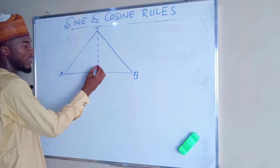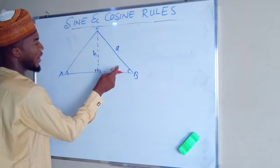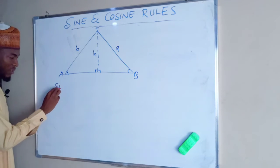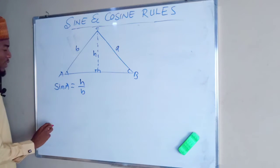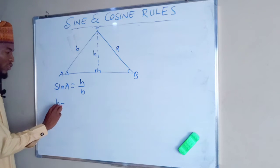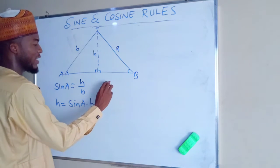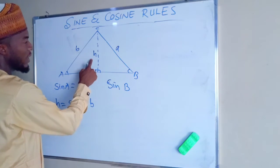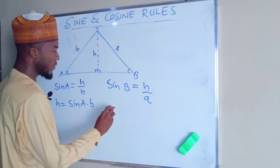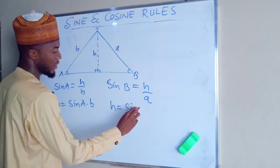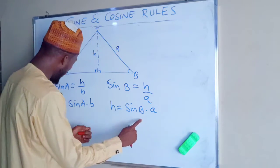For the sine rule, suppose we have a triangle. If you draw a line from C perpendicular to line AB, you form two right-angle triangles. Call this length H. Sine A equals opposite over hypotenuse, which is H divided by b. Multiplying both sides by b: H = b·sinA. Then sine B equals opposite over hypotenuse, which is H divided by a. Multiplying both sides by a: H = a·sinB.